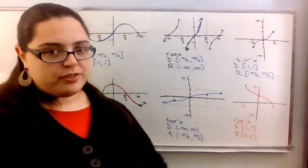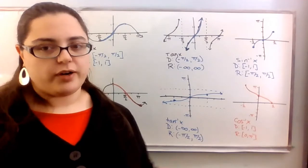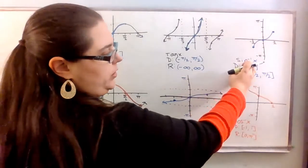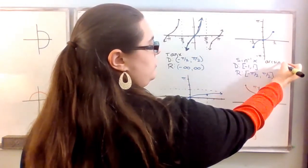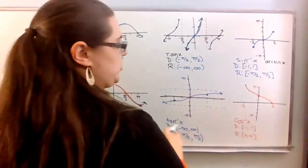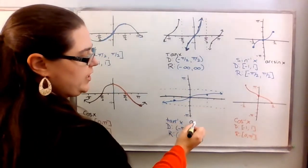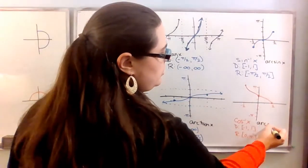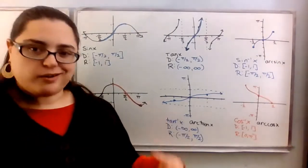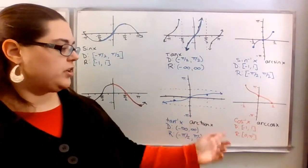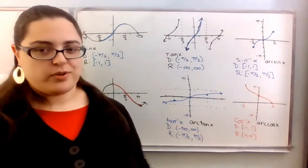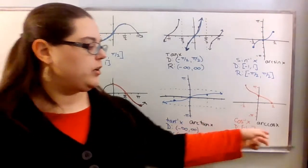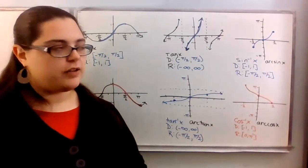Sometimes an alternate notation is used for inverse trig functions. Instead of sine⁻¹, you might see arcsin(x). Similarly, you might see arctan and arccos instead of the inverse notation. This arc notation means the same thing as the inverse of the trig function. My tendency is to use the inverse notation, but if you head into another math class, you may see arc being used instead.